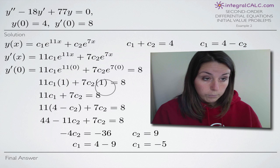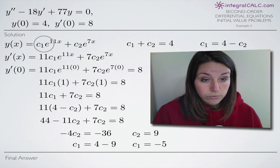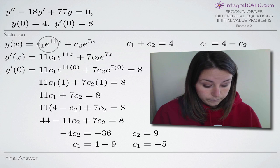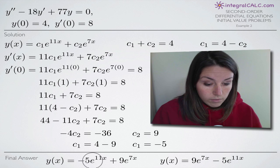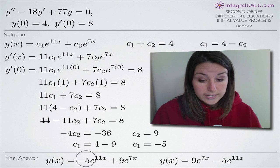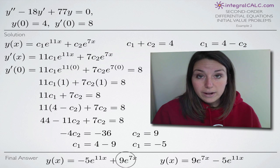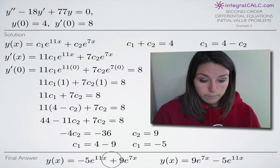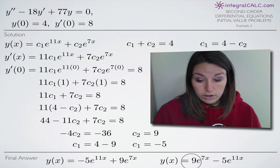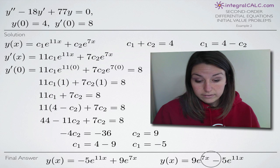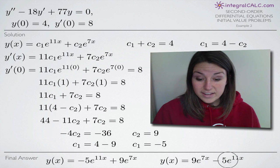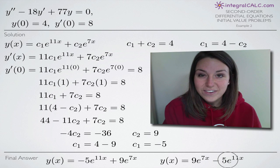Now that we have c sub 1 equals negative 5 and c sub 2 equals 9, we plug back into our equation for y of x. To avoid leading with a negative sign, we flip the terms and our final answer is y of x equals 9e to the 7x minus 5e to the 11x. I hope that helped, and I'll see you in the next video!